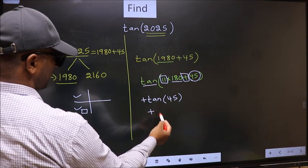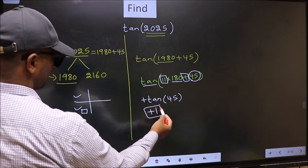So, plus tan(45°) is 1. This is our answer.